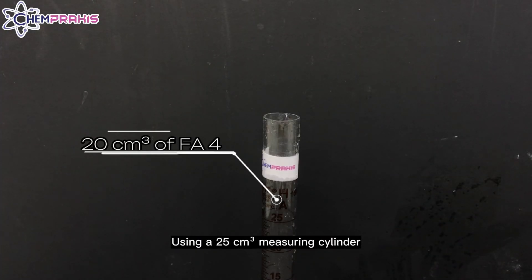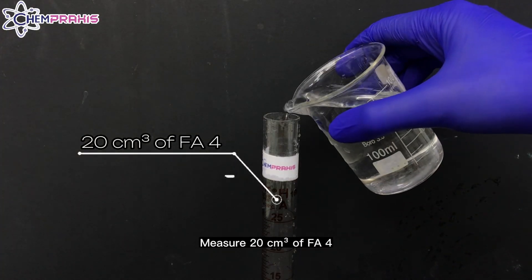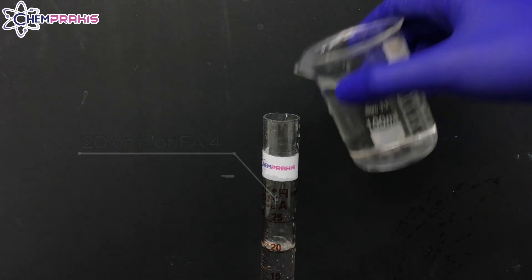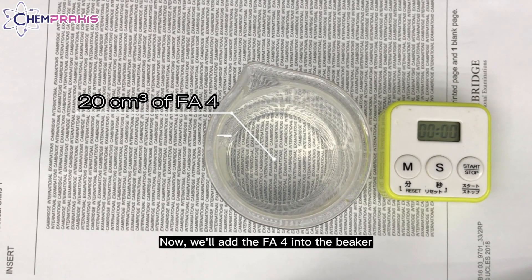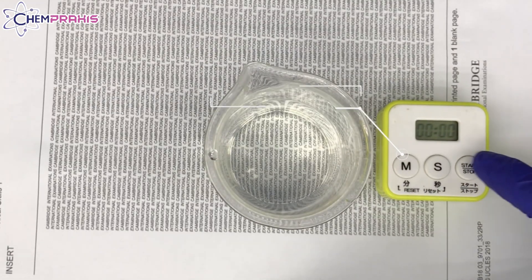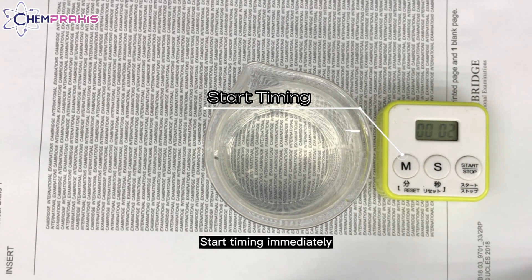Using a 25 cm³ measuring cylinder, measure 20 cm³ of FA4. Now we'll add the FA4 into the beaker. Start timing immediately.